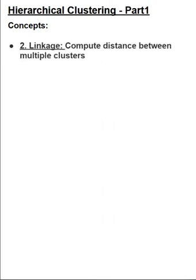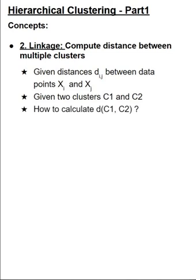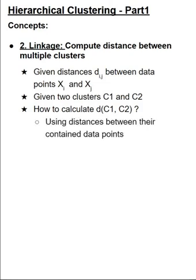Moving on, the next concept is linkage. This refers to how to compute distance between two clusters using distances of contained data points. Formally, let's start some definitions. Given distance d_ij between data point x_i and x_j, and given two clusters C1 and C2, how to calculate d of C1 and C2, which means the distance between cluster C1 and cluster C2, using distances between their contained data points and following a monotonicity property.